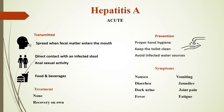Hepatitis A is only acute. It is transmitted by fecal-oral route — by contact with an infected stool, infected food or beverage, or anal sexual activities. The treatment is just recovery on your own. The prevention for hepatitis A is proper hand hygiene, keep the toilet clean, avoid infected water and shellfish. If you travel to third world countries, you should avoid drinking water or eating food washed with tap water.